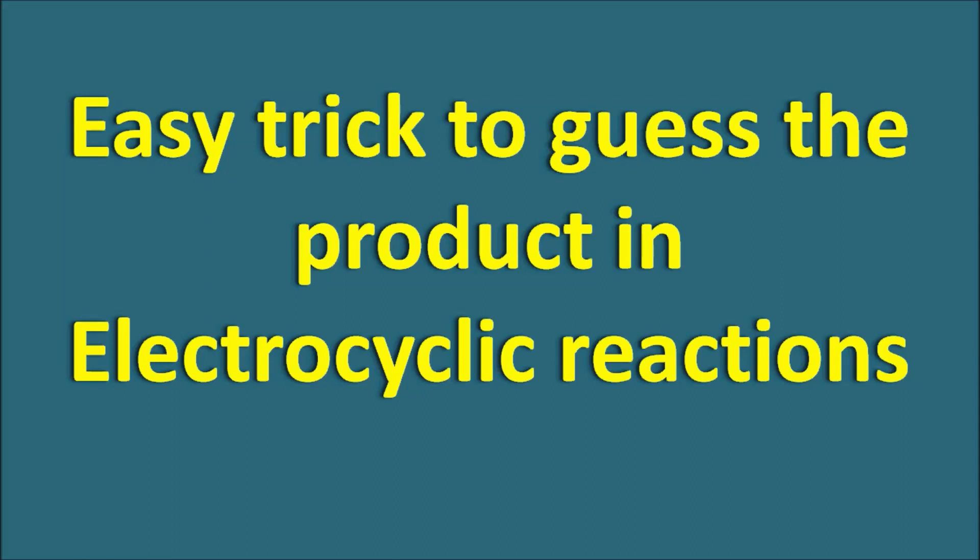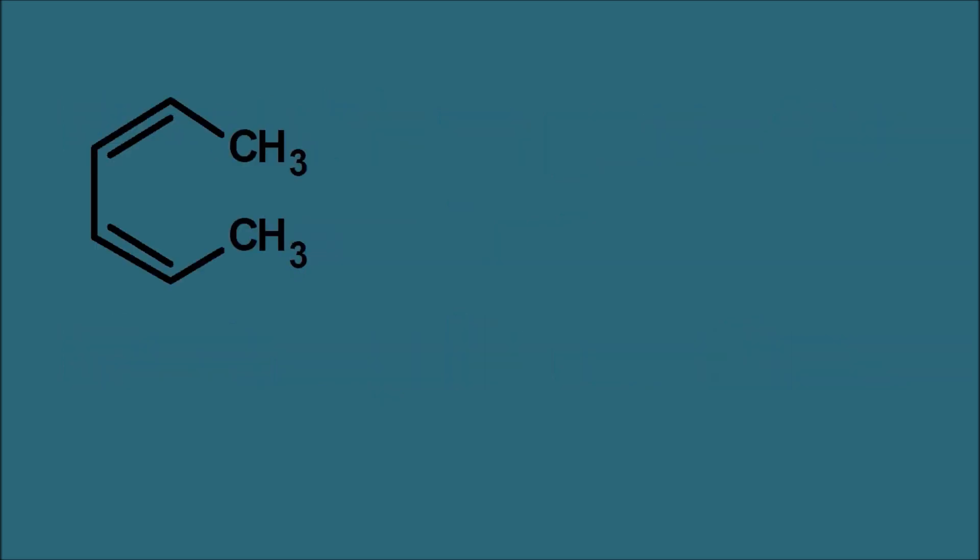Hi everyone. Today in this video let us discuss the easy trick to guess the product in electrocyclic reactions. Electrocyclic reactions are one type of pericyclic reactions which are observed at the conjugated double bonds.